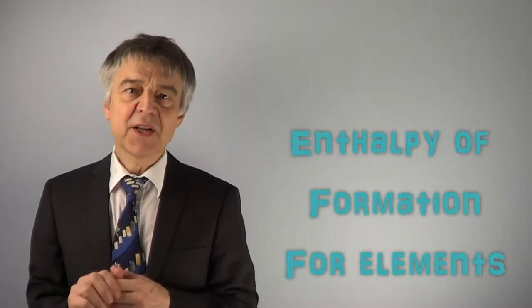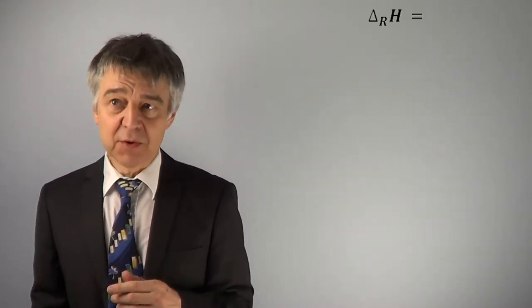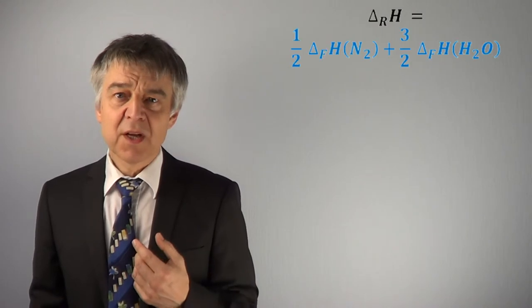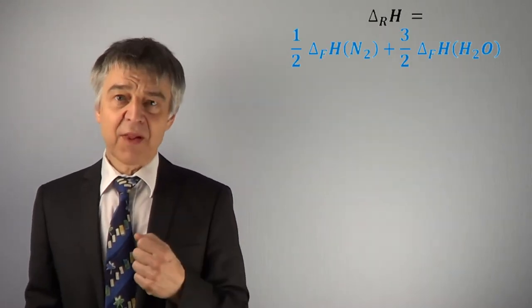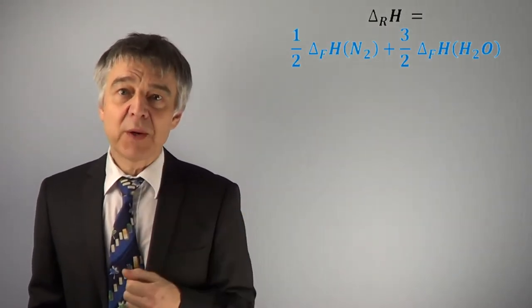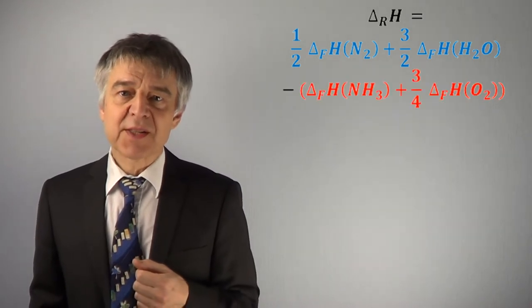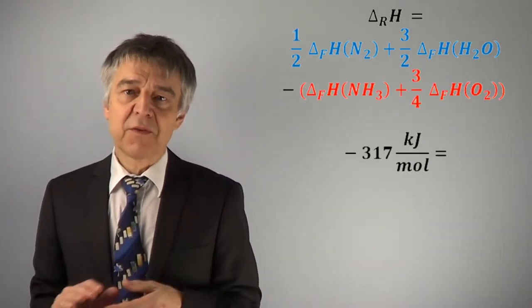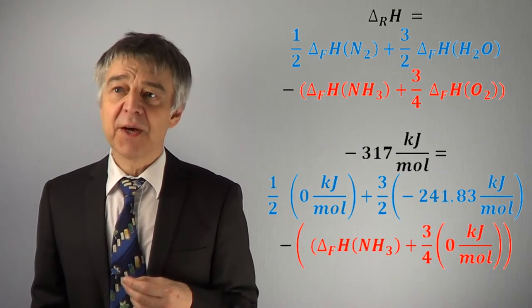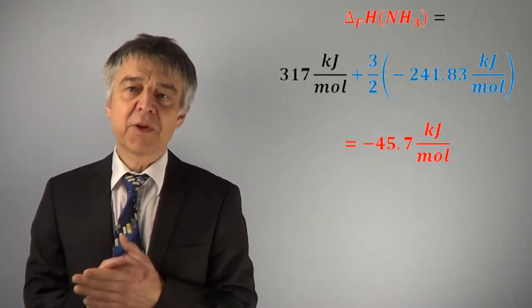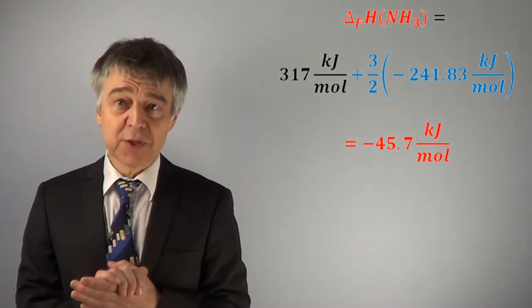The enthalpies of the elements are equal to zero by definition, so the reaction enthalpy is given and we obtain an equation that we can solve for the enthalpy of formation of ammonia. We calculate negative 45.7 kilojoules per mole.